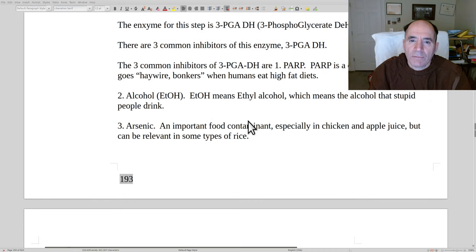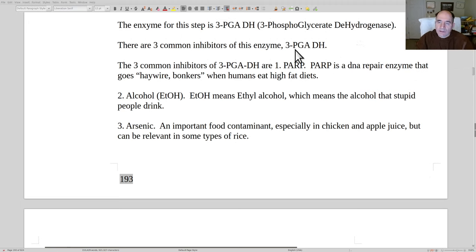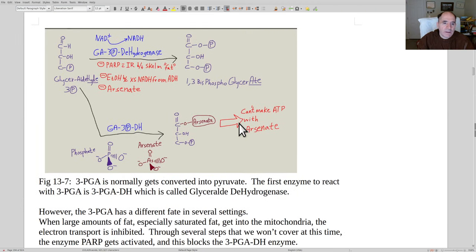There's three common inhibitors of 3-PGA dehydrogenase, that enzyme that processes 3-PGA. One is called PARP, and PARP is this polyadenosyl DNA repair enzyme that really gets damaged when people start eating high-fat diets, and it's kind of a complex thing, but the bottom line is you'll damage DNA, you'll activate PARP, and PARP causes problems when somebody's eating a high-fat diet, especially with high-saturated fat. Alcohol also can inhibit 3-phosphoglyceride dehydrogenase, so it's pretty stupid to drink alcohol. You want to really minimize that. I recommend zero alcohol, but if you have to have a sip here and there, fine, but if you want to optimize your health and your brain, alcohol is just a toxin.